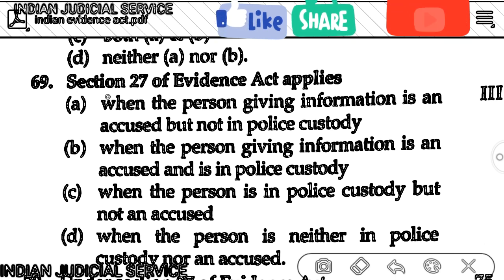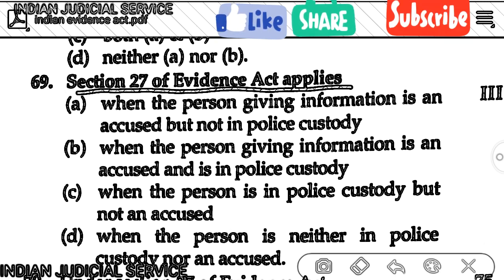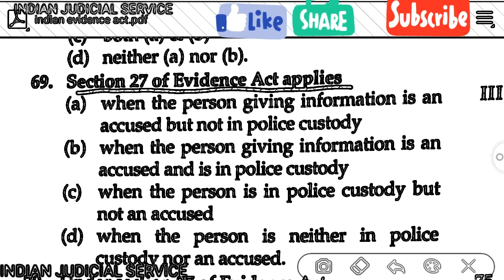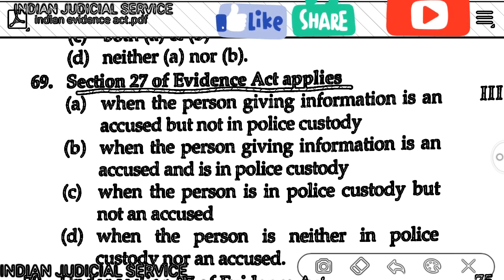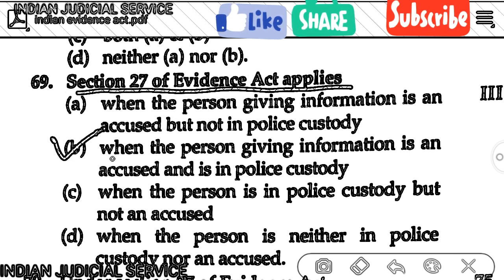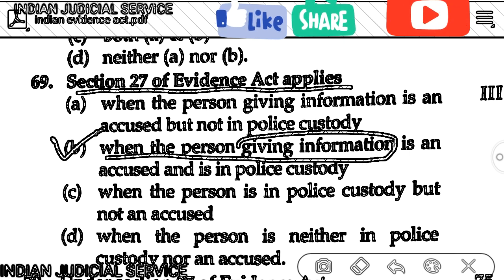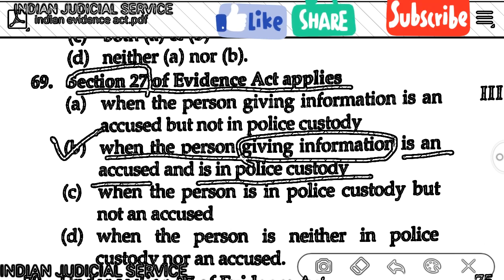Question number 69: Section 27 of the Evidence Act applies when — the answer is option B — when the person giving information is an accused and is in police custody. Both conditions are required: the person must be an accused and must be in police custody.